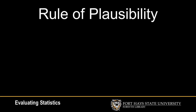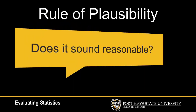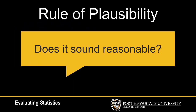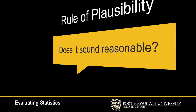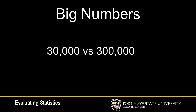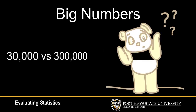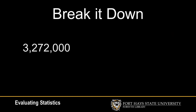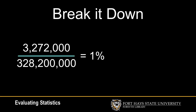The final way to evaluate statistics is the rule of plausibility, which means thinking about how reasonable it sounds. One way people try to trick us with statistics is by reporting really large numbers. Most people are not very successful at conceptualizing the difference between 30,000 and 300,000. One way to handle this problem is to break the number down. For example, if you are given a large number, convert it into a percentage of the U.S. population, then apply that percentage to the population of your hometown and see if it sounds plausible.